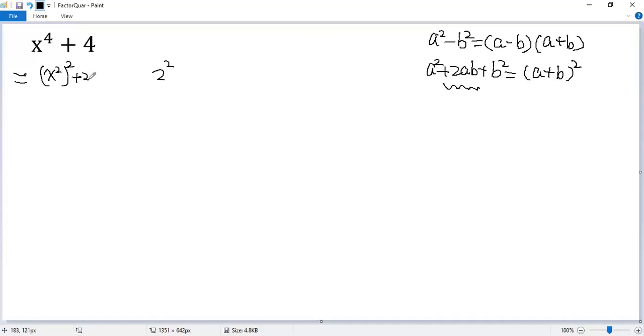So we add 2a is x squared, b is 2 plus 2 squared. You need to minus the same term to balance. So minus 2x squared times 2.